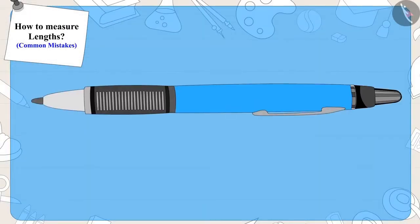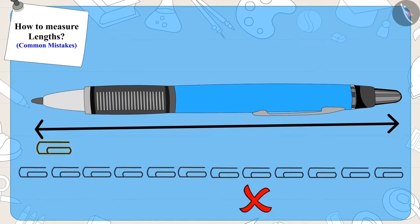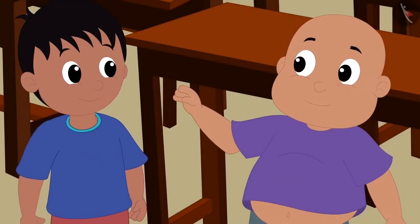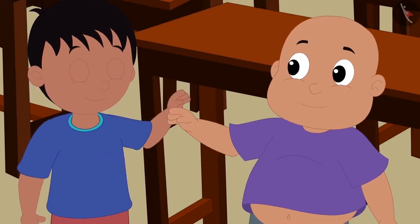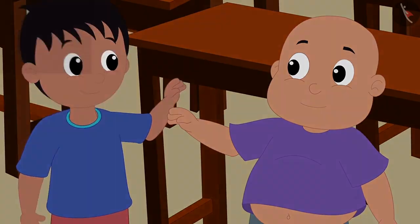Children, remember that whenever we have to measure the length of an object with the help of another object, then we should not leave any empty space in between. Raju and Bablu were very happy to learn this from Appu and they became friends again.